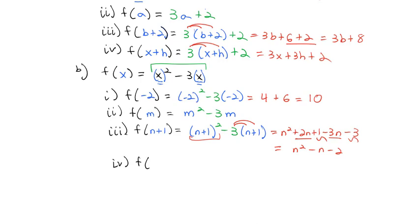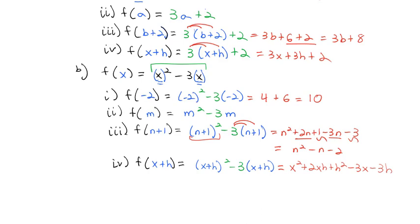A common one we'll see later in calculus is plugging in x+h. That means x² becomes (x+h)², minus 3 times x becomes minus 3(x+h). Going through the same steps to simplify, we end up with x² + 2xh + h² - 3x - 3h, and there are no like terms to combine, so we stop there.